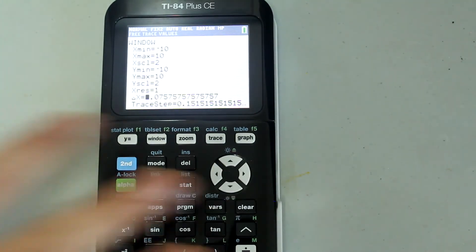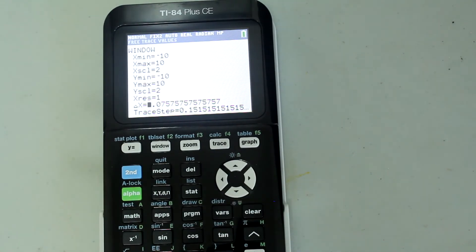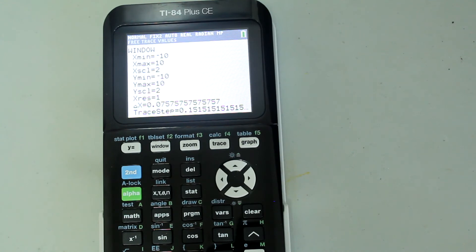Next, we have the delta x option. The delta x allows you to instruct the calculator on the distance between pixels. The default formula that the calculator uses is x max minus x min divided by 94. Also, you probably want to leave that to default.